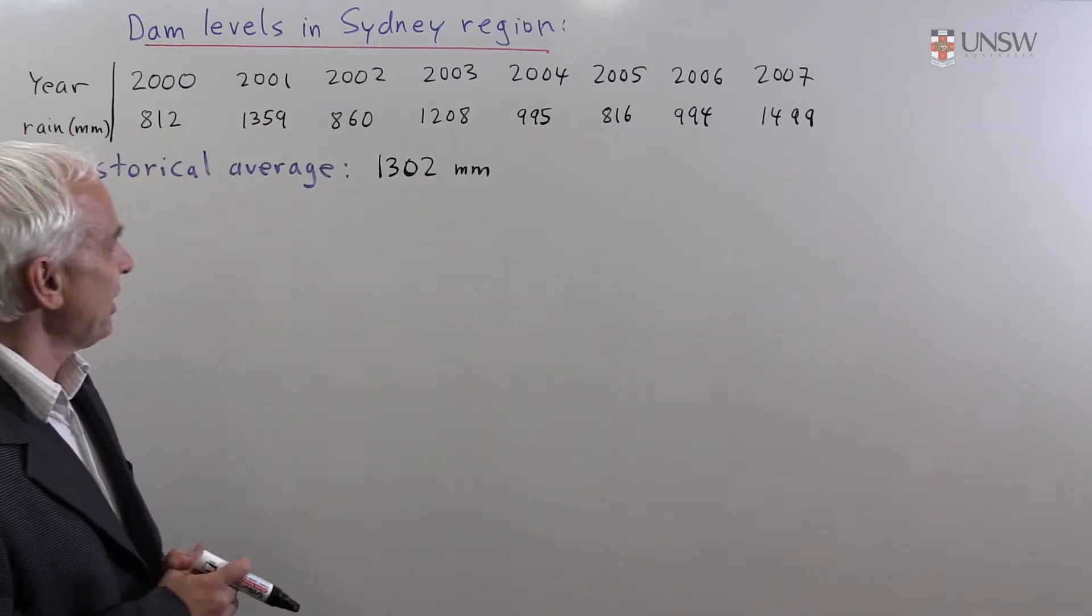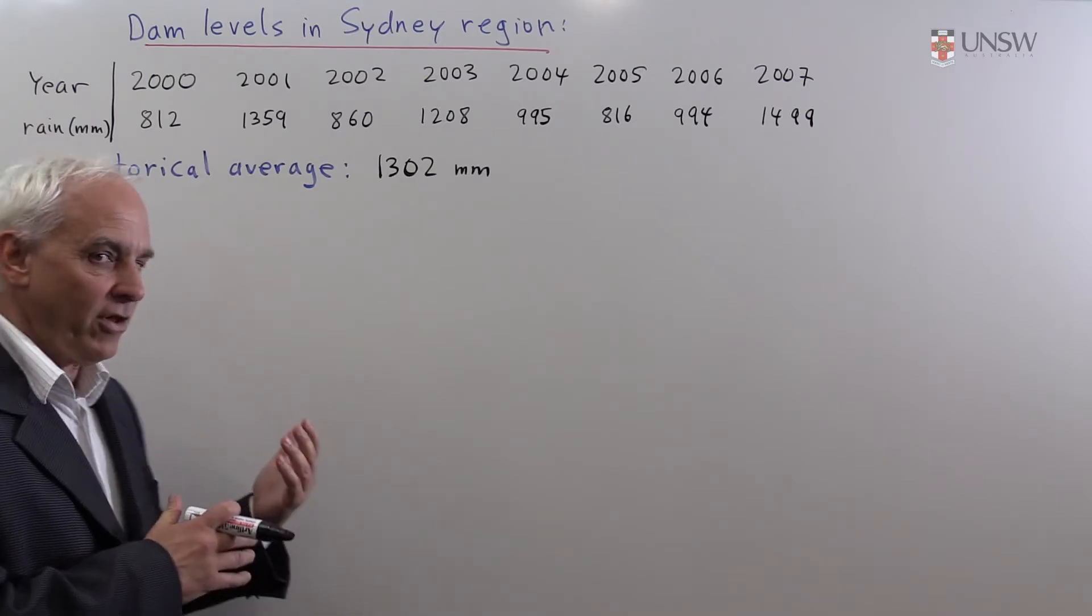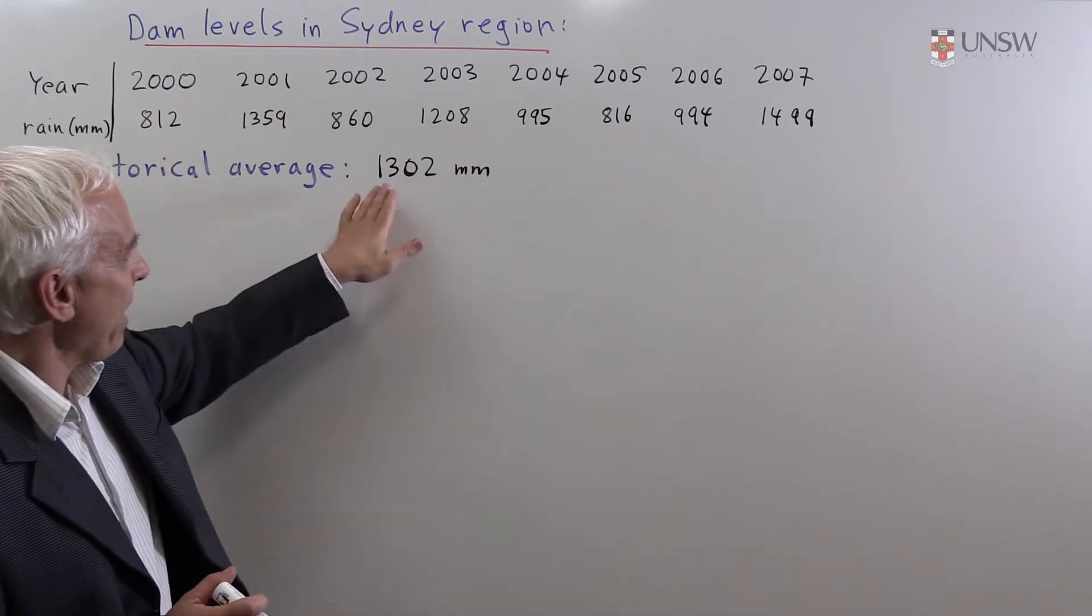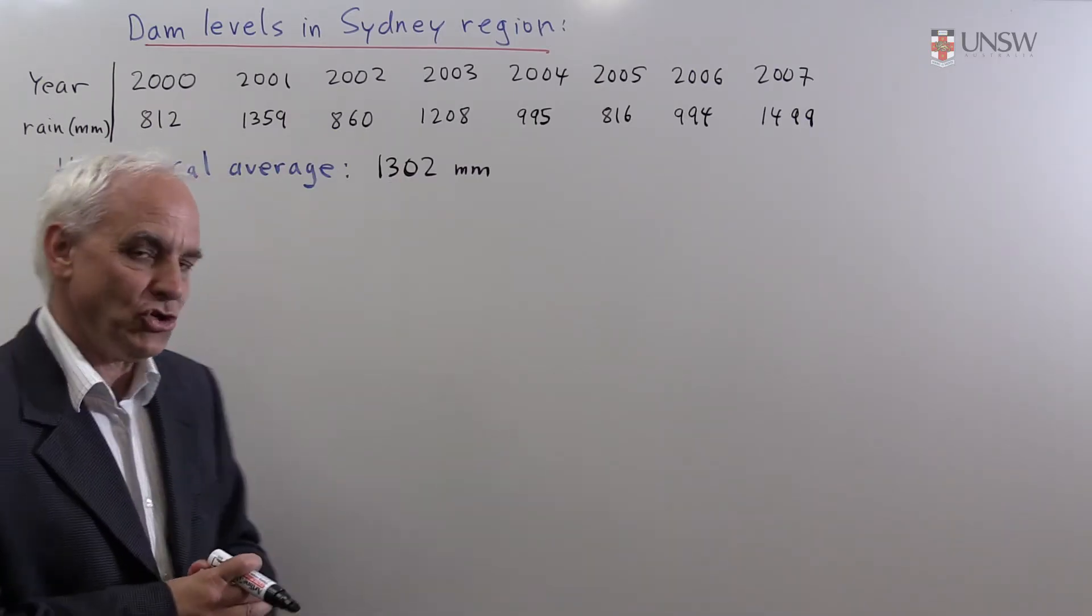And we're interested in determining whether this rainfall is significantly below or above the long-term average. The long-term average is 1302 millimeters.